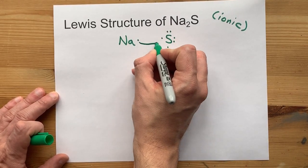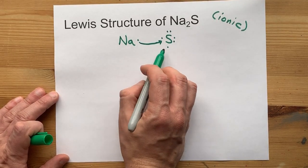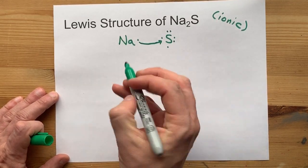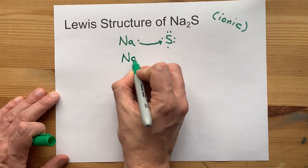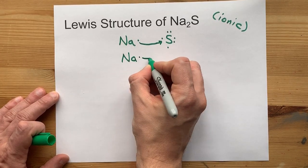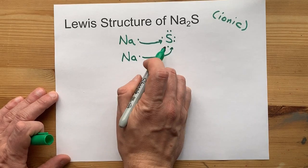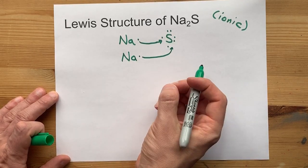This sodium will donate one to the cause, but sulfur still only has seven. We're going to need another sodium atom to donate its valence electron. Now, sulfur has eight total.